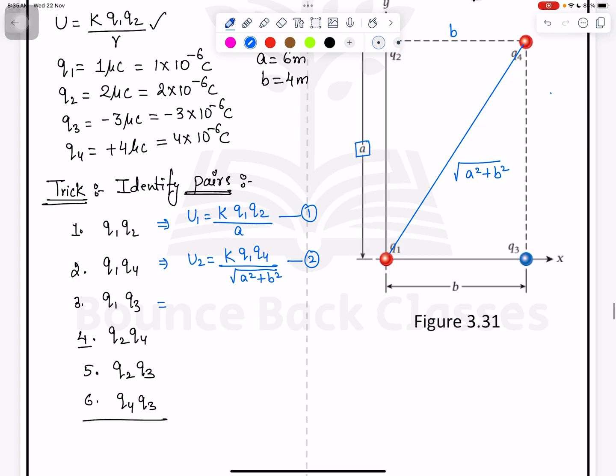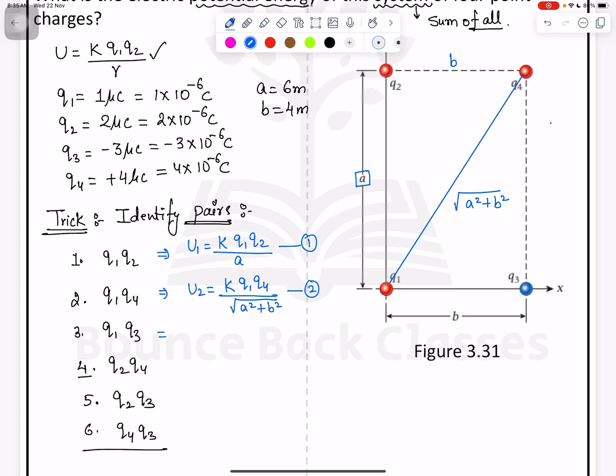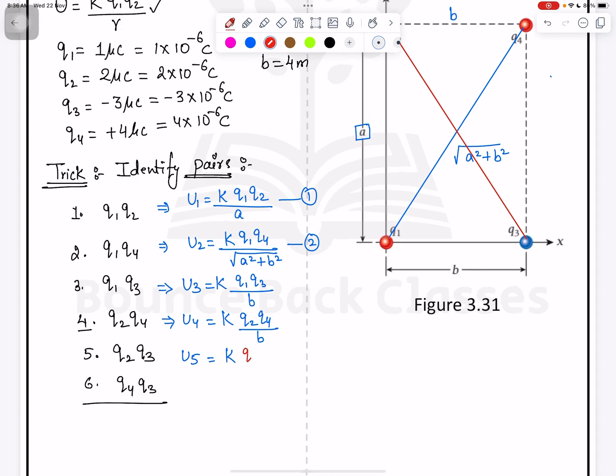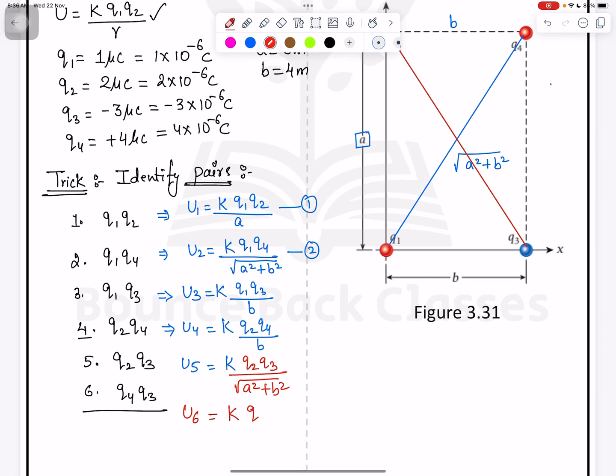Similarly you can solve all the values. Q1 Q3, U3 equals K times Q1 Q3 and distance is B. Fourth one, U4 equals K times Q2 and Q4 divided by B. U5, K times Q2 and Q3, just check this one Q2 and Q4, this is same like this, having the same distance root of A squared plus B squared. So Q2 Q3 divided by root of A squared plus B squared. And the last U6, K times Q4 Q3 and the distance is A. You get all the six equations: 3, 4, 5, and 6.